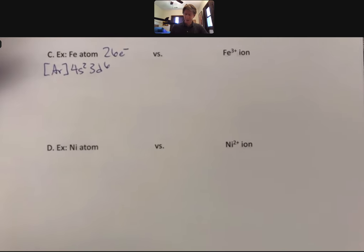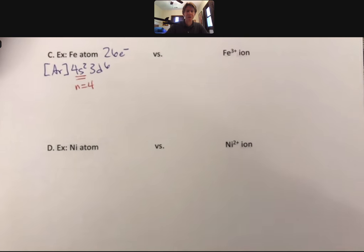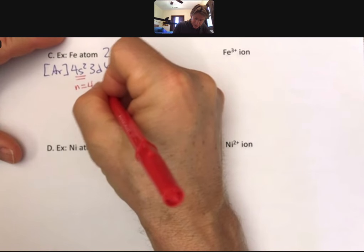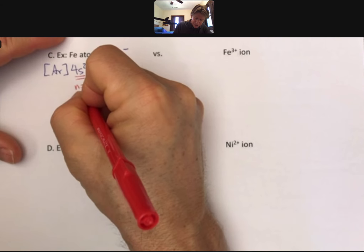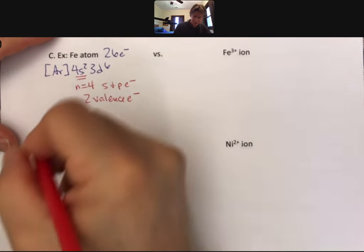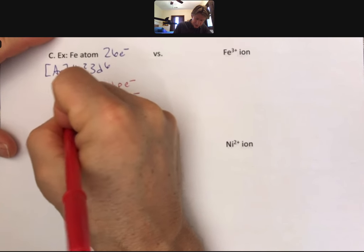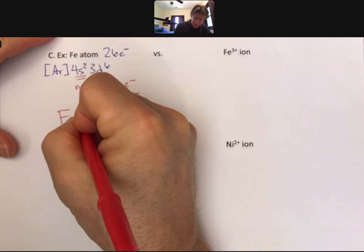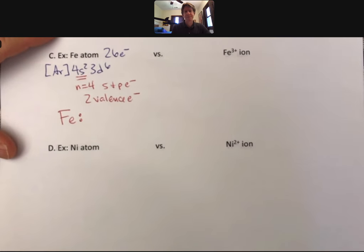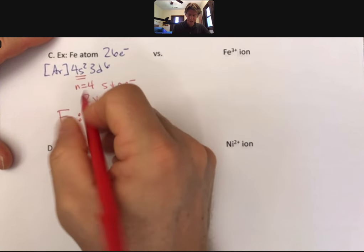That is the electron configuration for iron. Here's again where it comes in, n equals 4, highest value of n, s and p electrons only. We're going to have 2 valence electrons, and we're going to have Fe, and we're just going to draw it as a pair. It's okay if you do them separately too. There's no brackets needed because there's no charge.